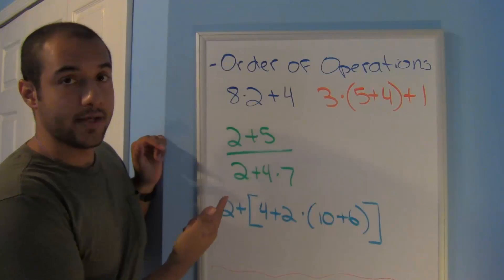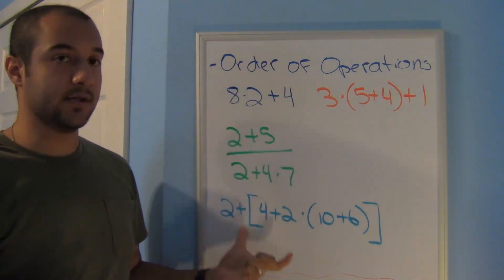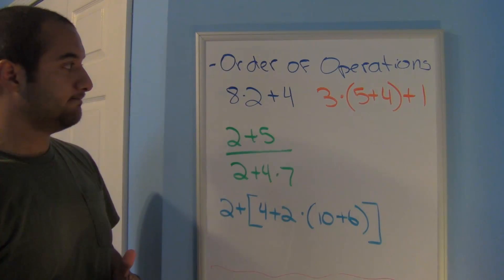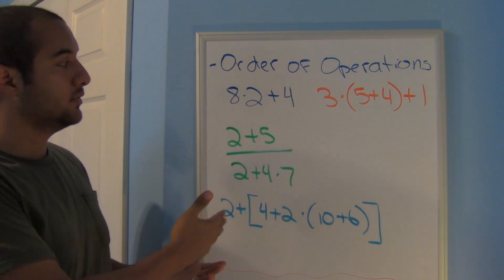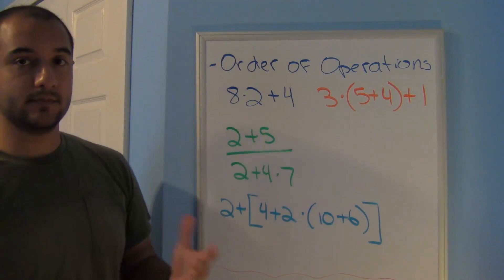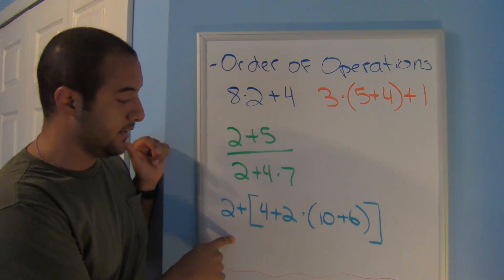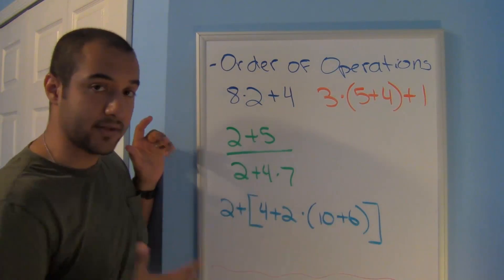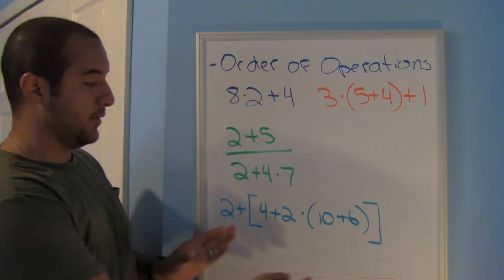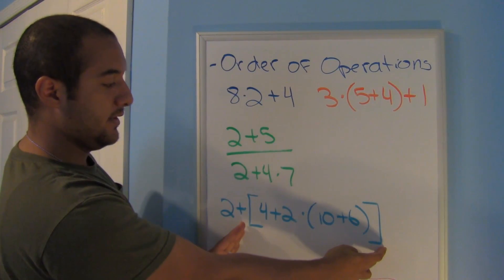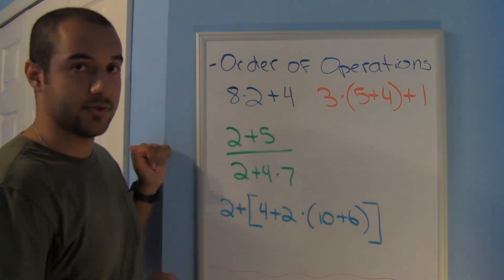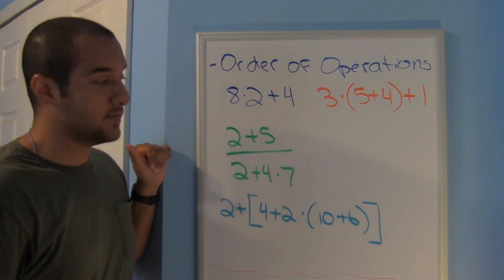All right. Go ahead and try these problems out. I wrote them in different colors. Go ahead and pause the video. Write them down and try them out and see what you get. If you want a hint for this last one, these are brackets. So it's like a double parentheses. So here we see that we have a parentheses and then a parentheses on the inside. So go ahead and try these out and I'll give you the answers in a couple of seconds.